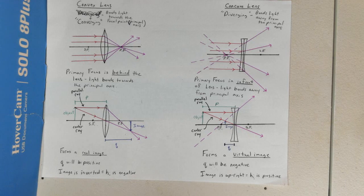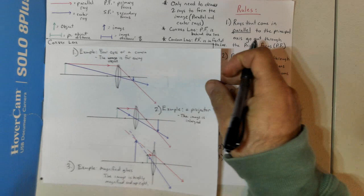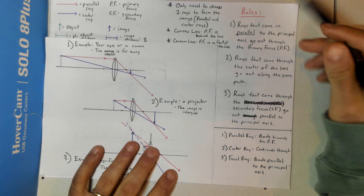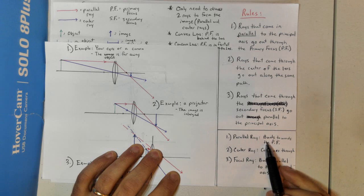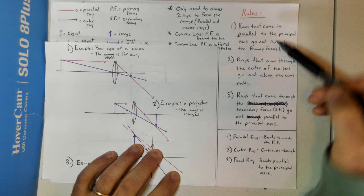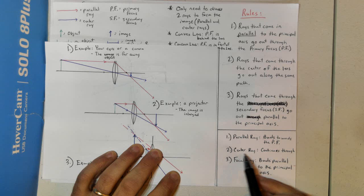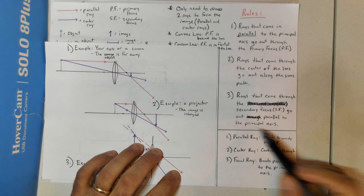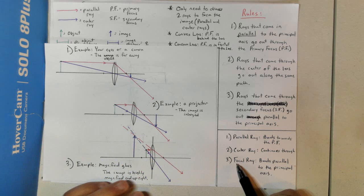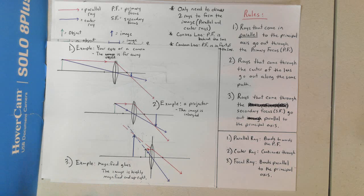Let's review some rules for convex lenses. Rule one: rays that come in parallel to the principal axis go out through the primary focus — that's our parallel ray. Rule two: rays that come through the center of the lens go out along the same path — that's our center ray. Rule three: rays that come through the secondary focus go out parallel to the principal axis — that's called our focal ray.